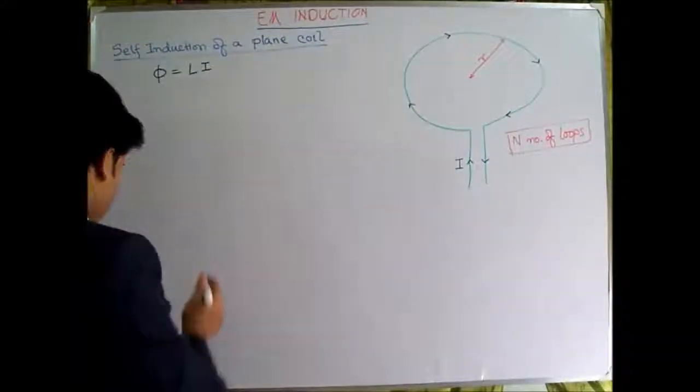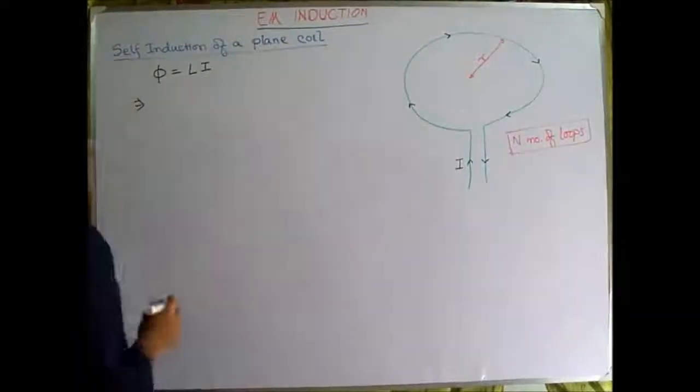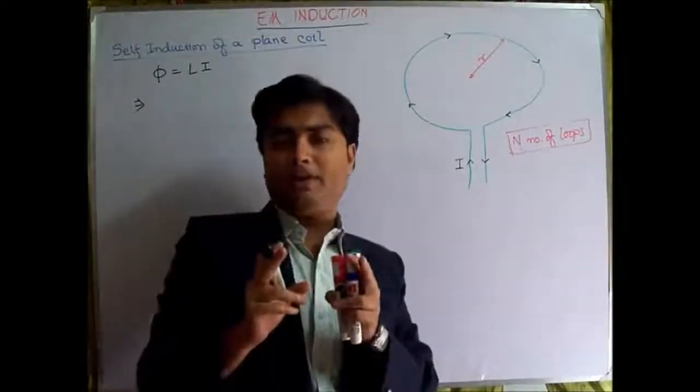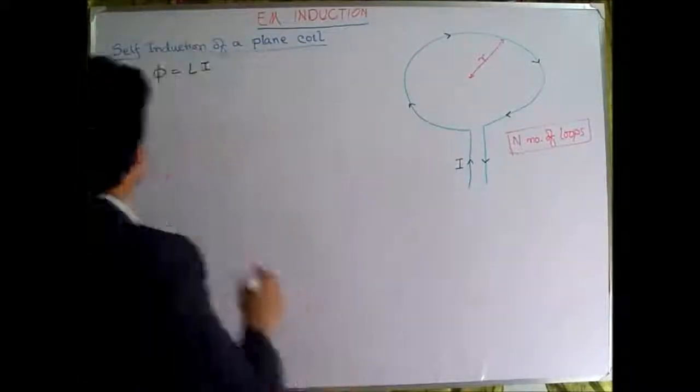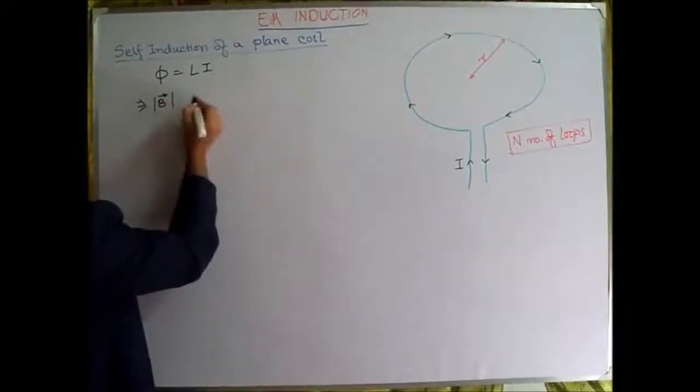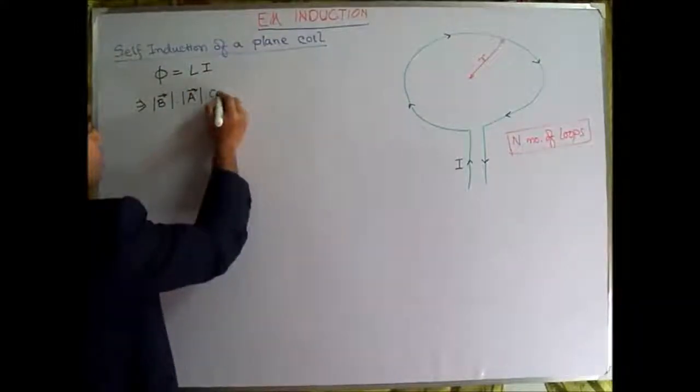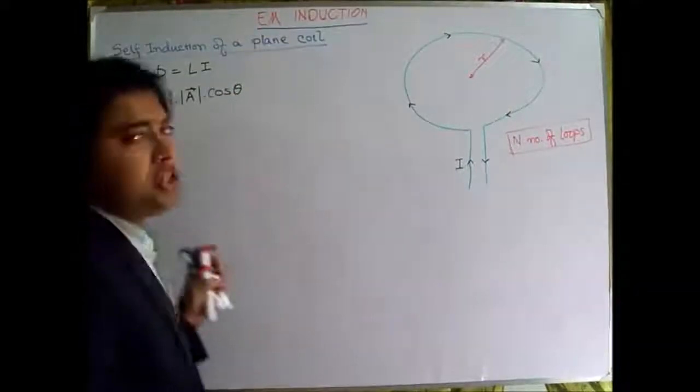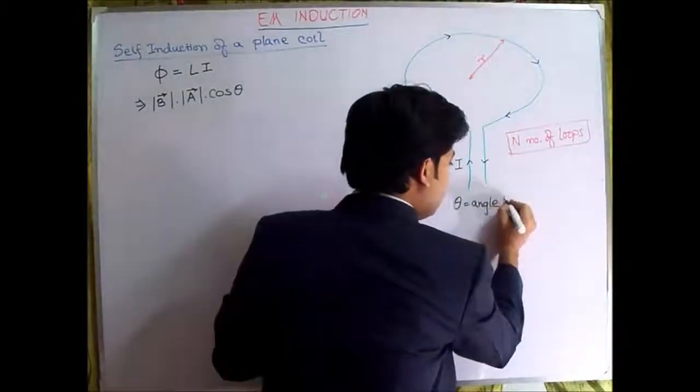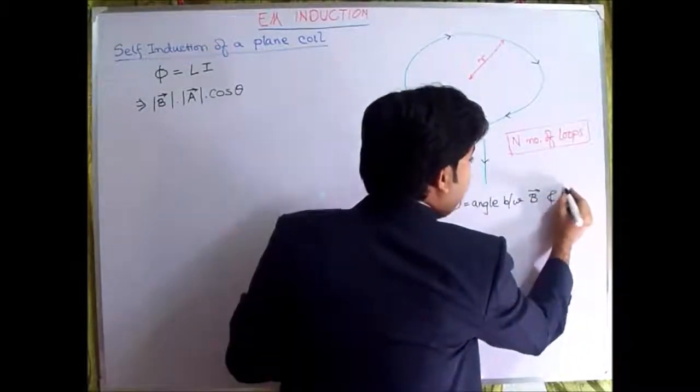Now, we know that this φ is equals to the dot product of the B vector and the A vector. So, this will be B magnitude multiplied by A magnitude multiplied by cos θ, where θ is the angle between the B vector and A vector.